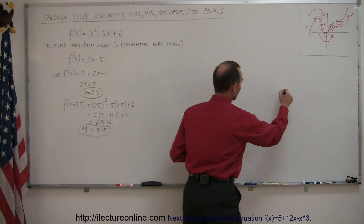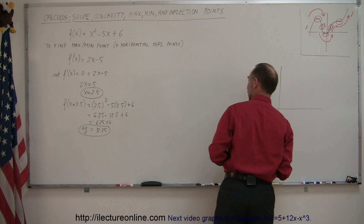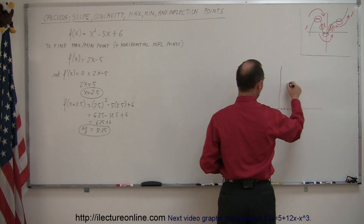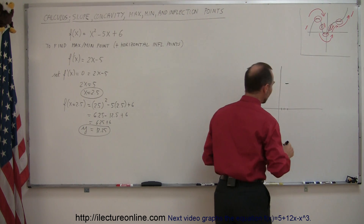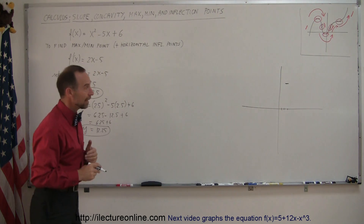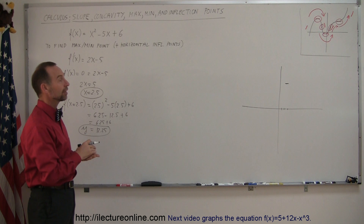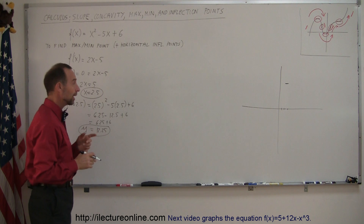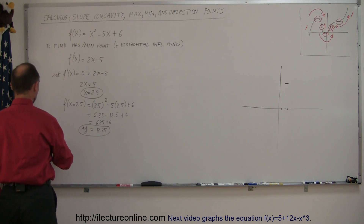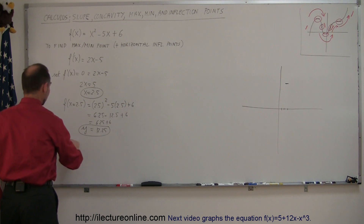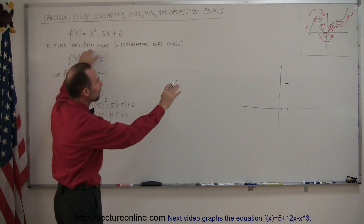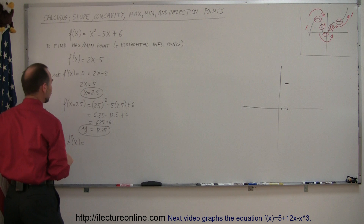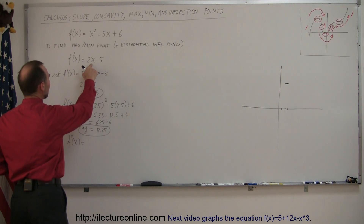Let's graph that point. When x is 2.5 and y is 12.25, we plot the point and draw a little horizontal line — that location is either a maximum, a minimum, or a horizontal inflection point. To determine which, we take the second derivative. So f double prime of x equals 2, taking the derivative of the derivative.